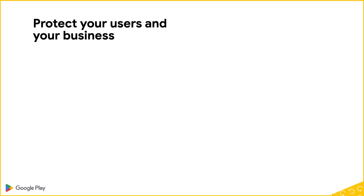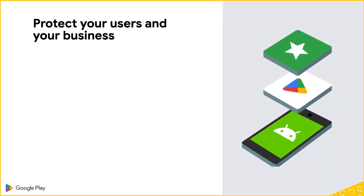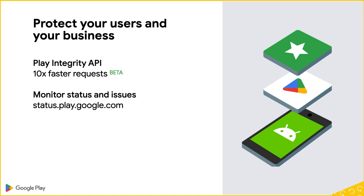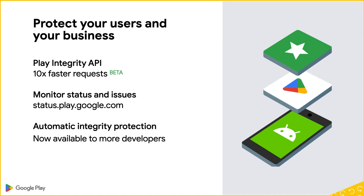Third, we've made some updates to the Play Integrity API to help protect your users and your business. Standard requests, now in beta, can be made on-demand to check any action, and at a few hundred milliseconds on average, they can give you a verdict up to ten times faster. You can now monitor Play Integrity API service status at status.play.google.com and be notified of any issues.